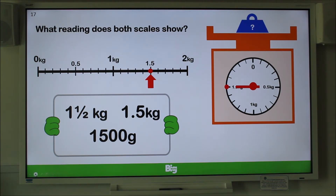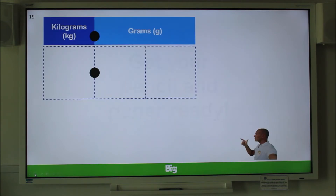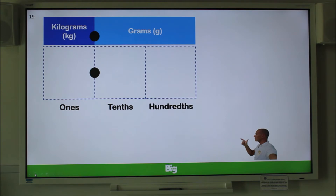Now let's look at something slightly different. Have your pencil and paper ready. Here we have a table with the mass partitioned into kilograms and grams. The first column is where the whole kilograms are recorded. After the decimal point, we have tenths and then hundredths of a kilogram, which we record in grams. Remember, one tenth of a kilogram is 100 grams and a hundredth of a kilogram is 10 grams.